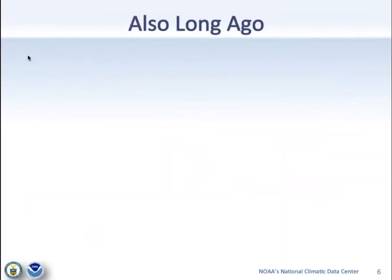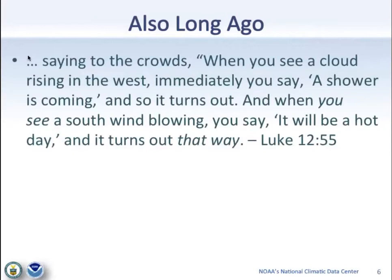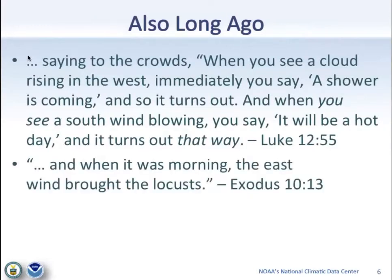Also long ago — pick your testament, we've got both represented here. From the New Testament: when you see wind coming from a certain direction, you can expect a certain type of weather. In the Old Testament, the east wind brought the locusts. All of these writings represented at the time everything everyone knew about the world, and significant attention was given to climate and how changes in the climate system, even day-to-day weather changes, tended to affect people in profound ways.